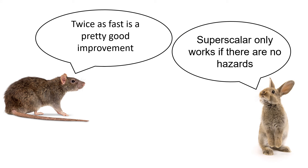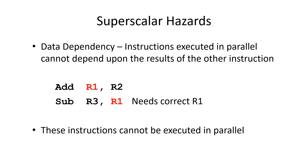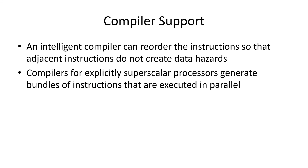Twice as fast is a pretty good improvement. Superscalar execution only works if there are no hazards. The same hazards that slow down pipelining will impact superscalar execution. Superscalar processors must have multiple ALUs in order to execute instructions in parallel. Data hazards can cause superscalar processors to execute instructions sequentially instead of in parallel. In this example, we're changing the value of R1 in the first instruction, so the second instruction needs the correct value with R2 added to it, causing a pipeline stall that stops superscalar execution.